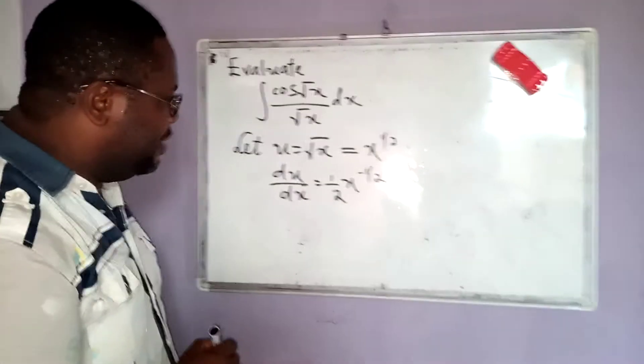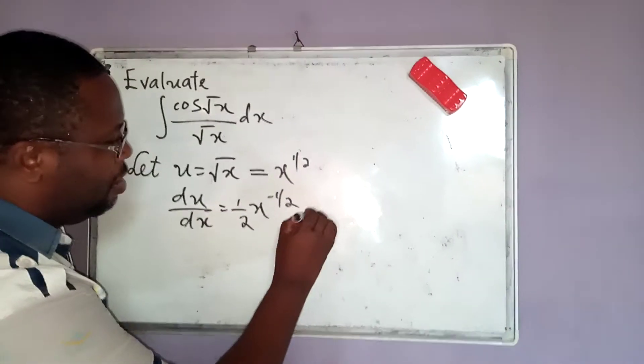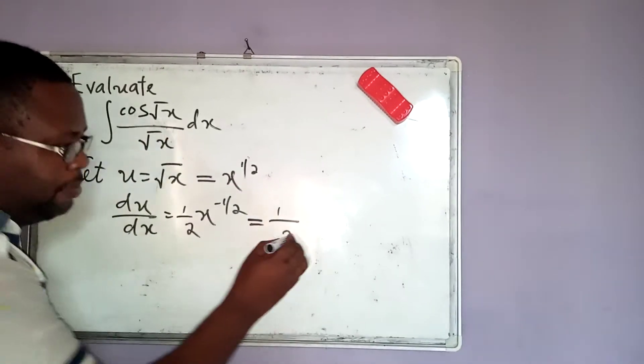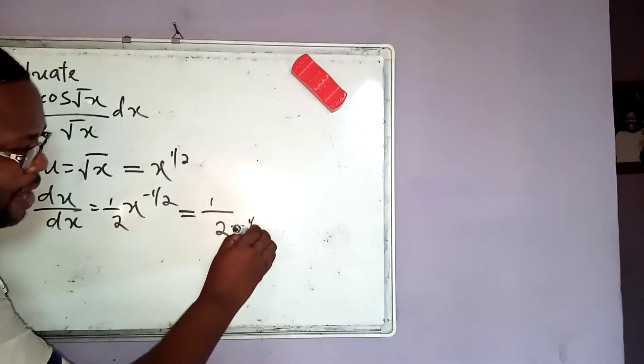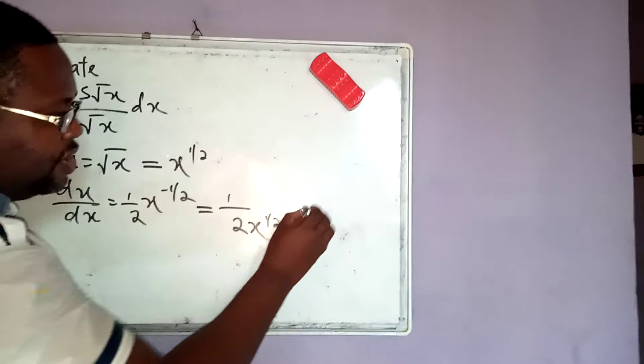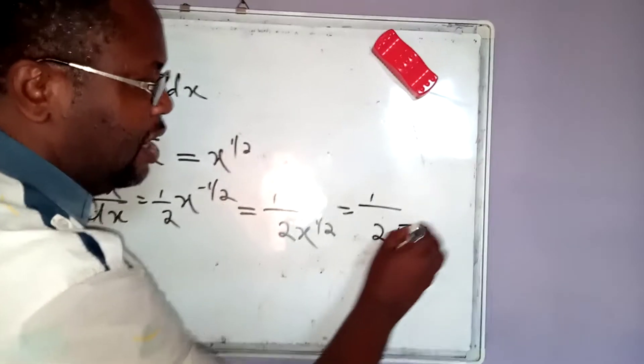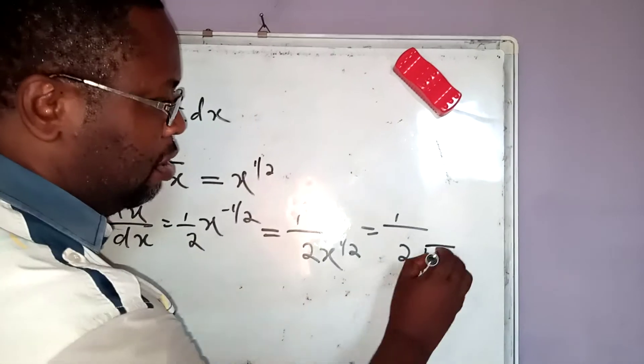Beautiful. Now what do I need to do at this stage? This simply becomes equal to 1 over 2. This power can come down, I am going to have x to the power half, which becomes equal to 1 over 2. Power half means the same thing as square root of x.